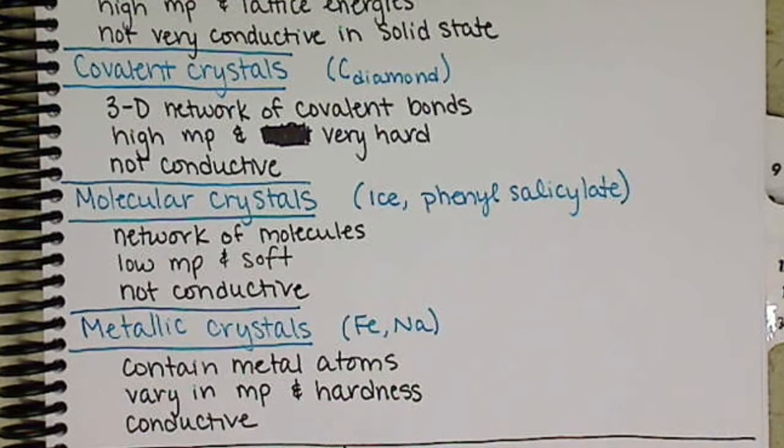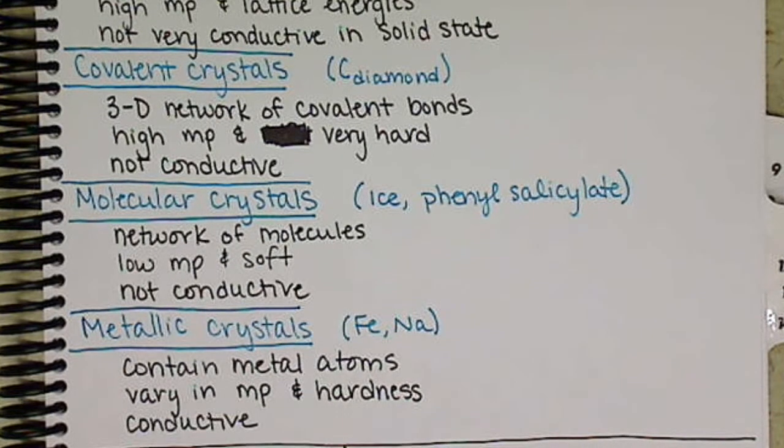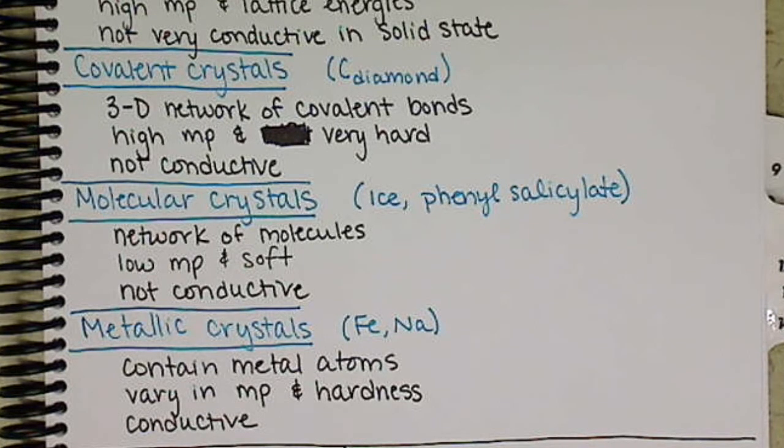Molecular crystals, these are networks of molecules. They have low melting points and are very soft, and they are also not conductive.